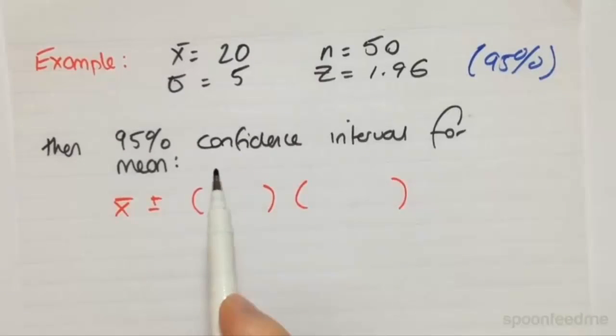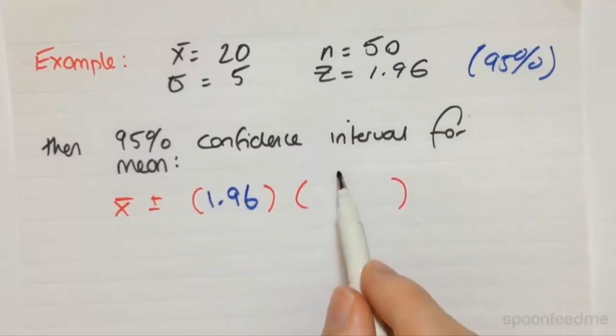Then the 95% confidence interval for the mean is going to be our sample mean plus or minus that critical Z value multiplied by the population standard deviation divided by the square root of the sample size.